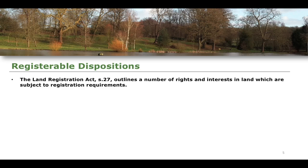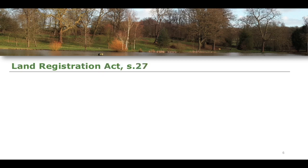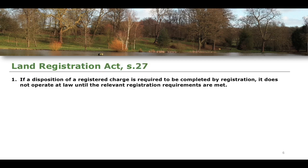Moving from section 23 to section 27, the Land Registration Act outlines a number of rights and interests in land which are subject to registration requirements — these are therefore called registrable dispositions. Section 27 states that if a disposition of a registered estate is required to be completed by registration, it does not operate at law until the relevant registration requirements are met.